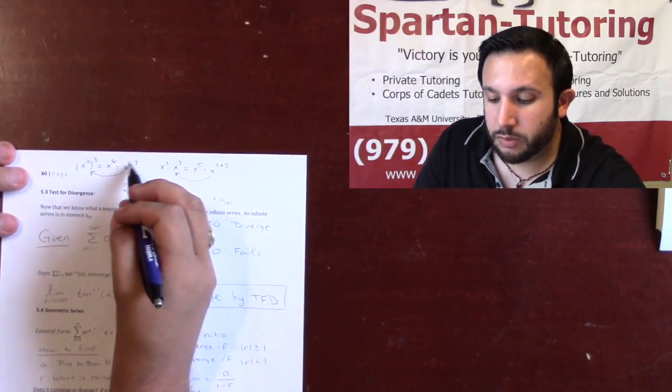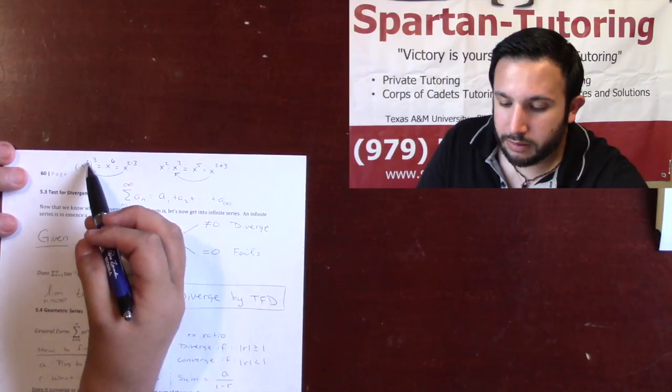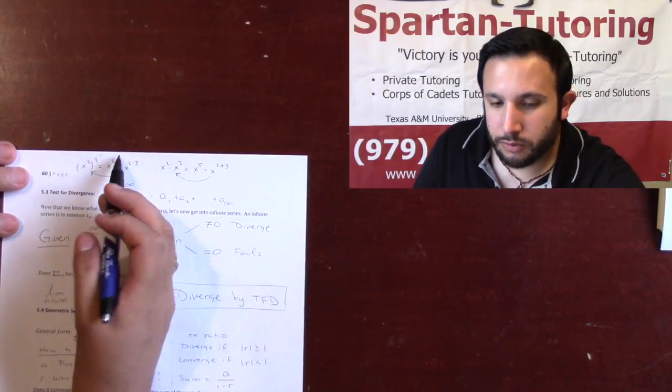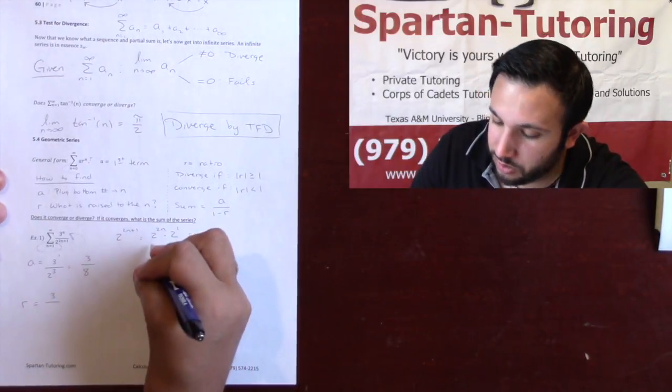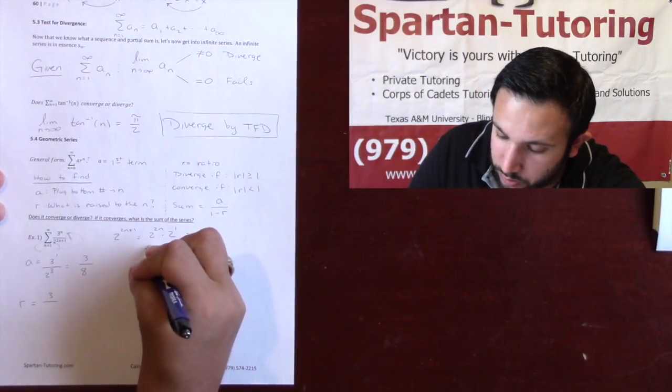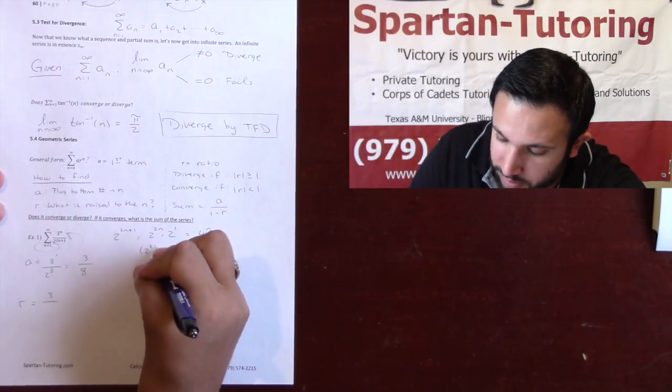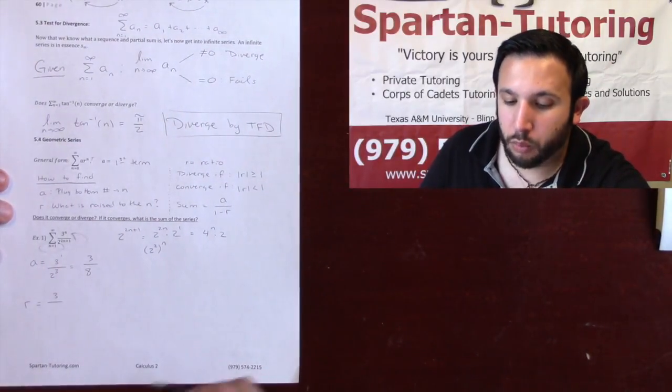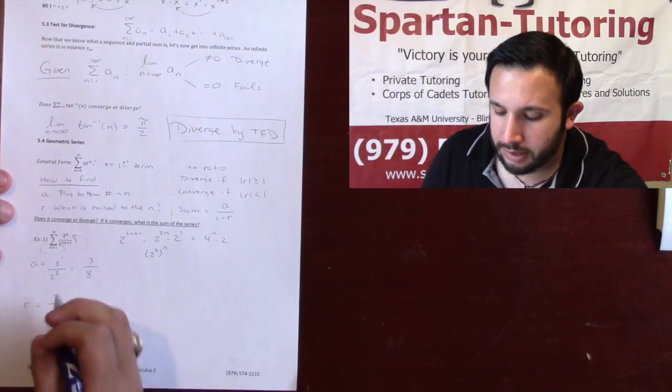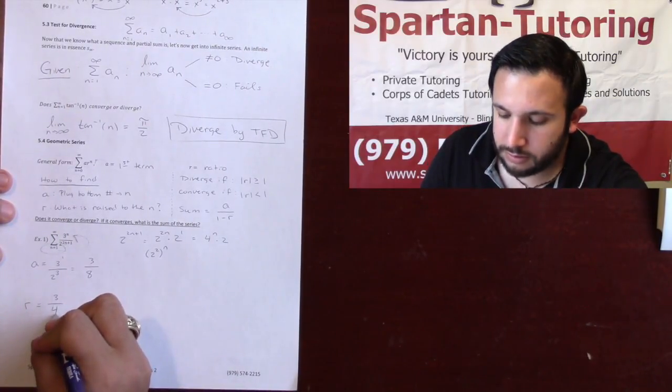And the point that I want to make is that whenever your exponents are being multiplied, it's like your exponent being raised to an exponent. And so this 2 to the 2n, I technically rewrote this as 2 squared to the n, hence your 4 to the n. And so on bottom, what I have being raised to an n is a 4.